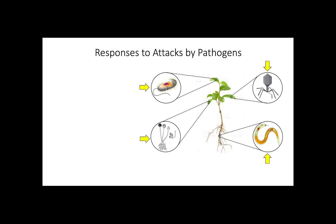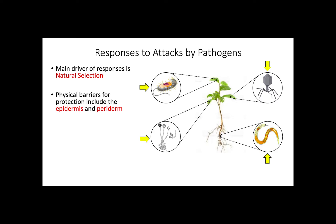The responses shown by plants upon being attacked are driven by natural selection. The first line of defense of plants is the epidermis and periderm, two physical barriers to prevent other organisms from causing damage. However, these layers of protection can be penetrated, sometimes even through natural openings such as the stomata.